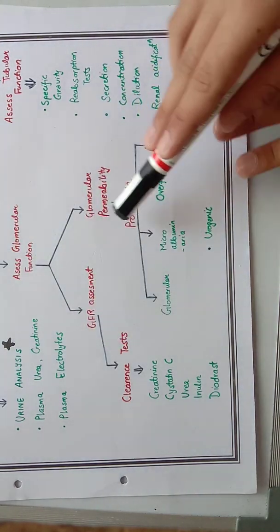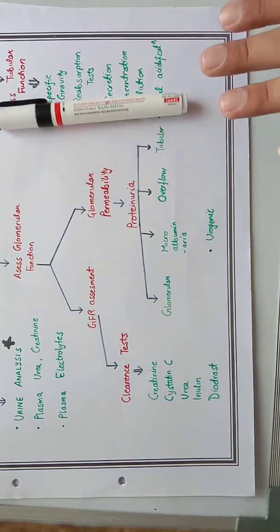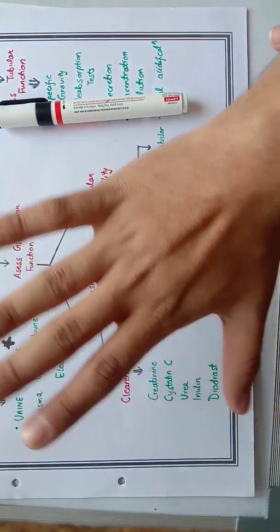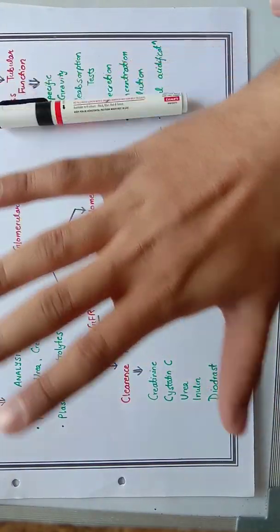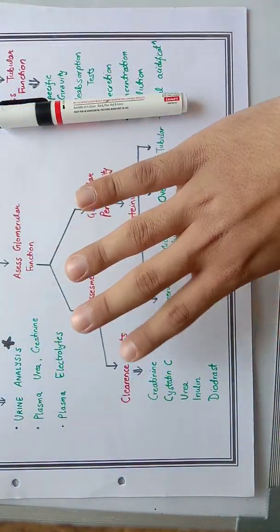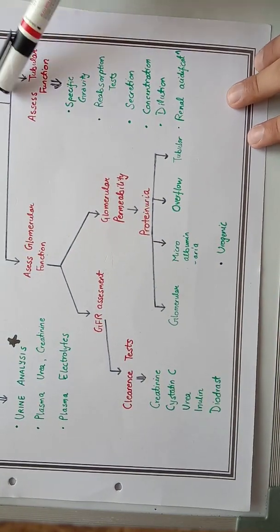So this is the classification you need to understand. At least you need general screening, glomerular function tests including GFR and permeability, and the permeability detected by proteinuria.